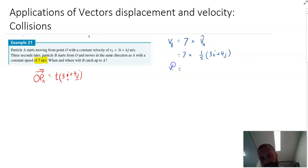So I have a velocity vector for B now of 7 fifths 3i plus 4j. Now I need to come up with the same thing that I've got here, which is a position vector. So OP for B is going to be equal to, not T, because T is the time that that one started, but this one doesn't start until 3 seconds later. So it's going to be T minus 3.